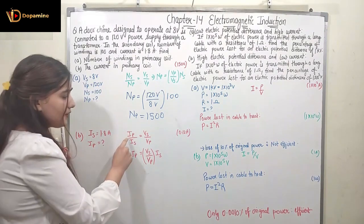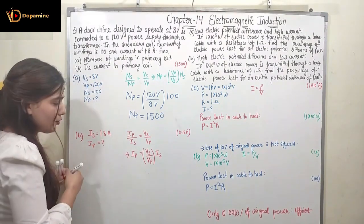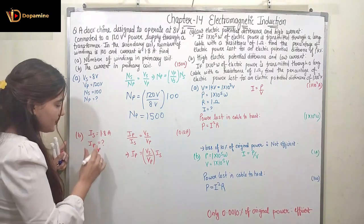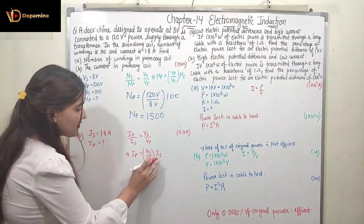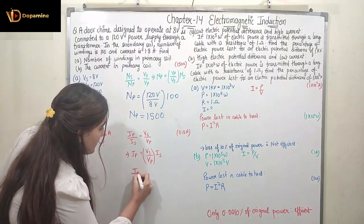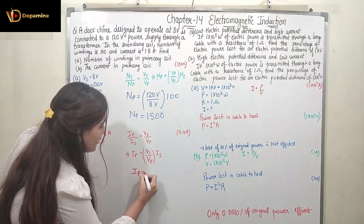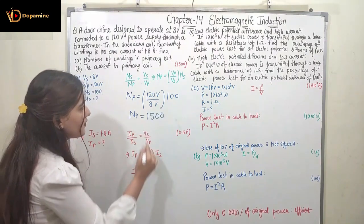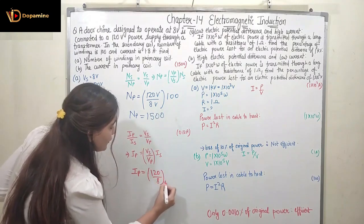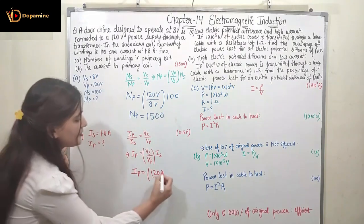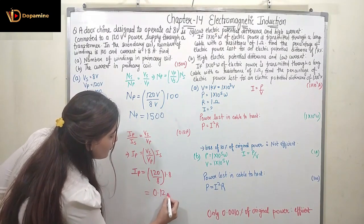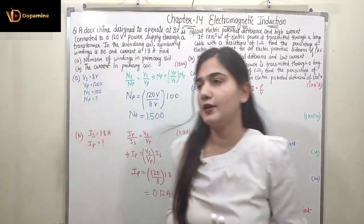The current is inversely proportional to the voltage, as we know from Ohm's law. So Ip = (Vs/Vp) × Is. Putting in the values: Ip = (8/120) × 1.8, which comes out to be 0.12 ampere.